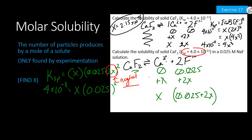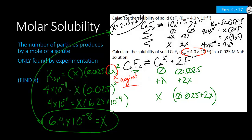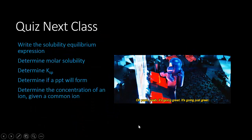Dividing both sides gives x = 6.4 × 10⁻⁸ as the solubility in the sodium fluoride solution. Notice how different they are: without fluoride in solution, we had a solubility of 2.15 × 10⁻⁴; now it's 6.4 × 10⁻⁸. A common ion shifts the equilibrium to produce more precipitate, and therefore solubility decreases.